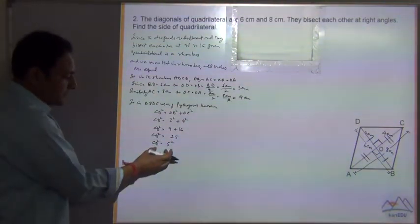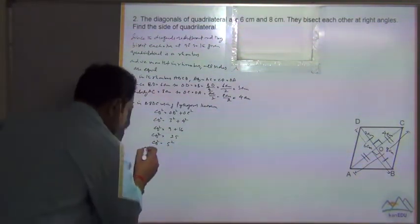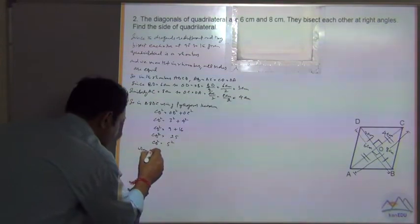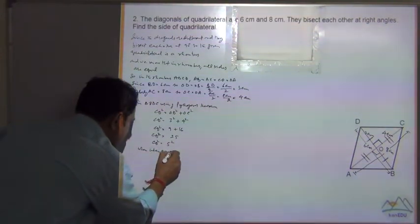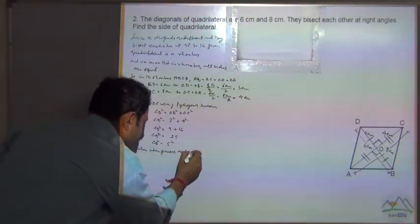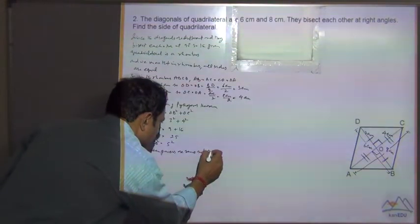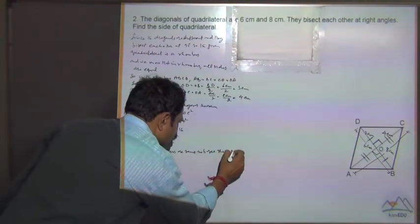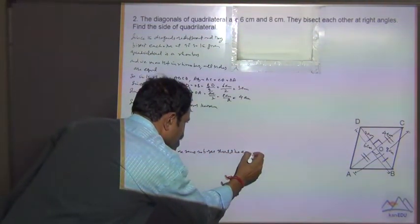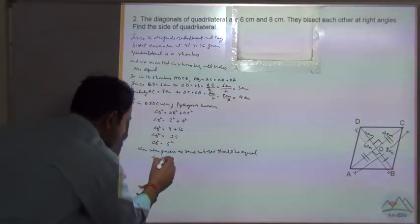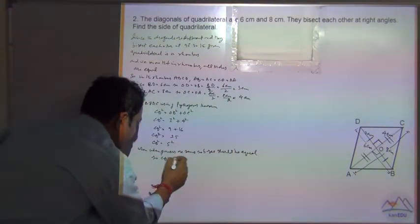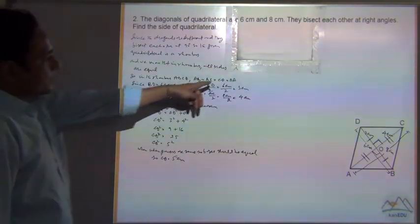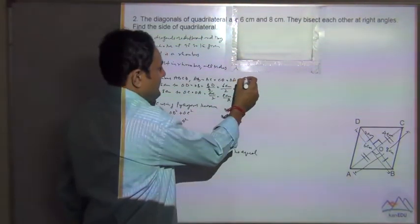So when the powers are same, it means bases should be equal. So CD is equal to 5cm.